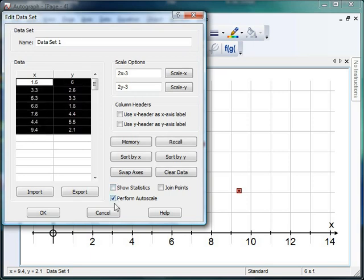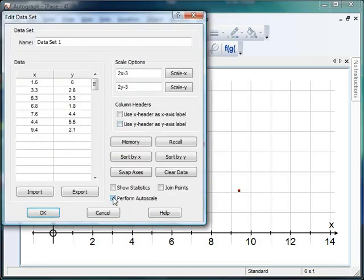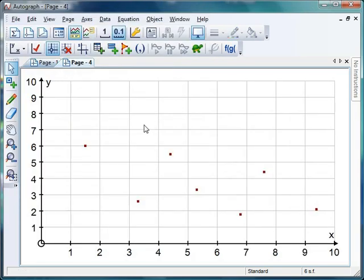Another nice thing here is this little perform auto scale thing. Now if that's not ticked and I click OK nothing changes. If that is ticked Autograph says I think I can do a better job than you at sorting out your axes. Let's have a look. Yeah it can. Not bad.